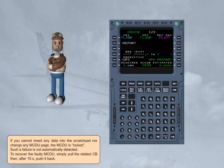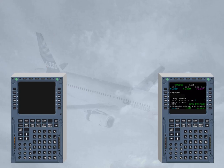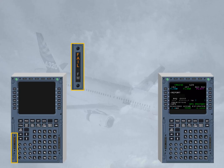If you cannot insert any data into the scratchpad nor change any MCDU page, the MCDU is locked. Such a failure is not automatically detected. To recover the faulty MCDU, simply pull the related circuit breaker, then after 10 seconds, push it back. The same procedure would apply in case of a MCDU failure indicated by the amber annunciator. You can try to recover the faulty MCDU by simply pulling the related circuit breaker, then after 10 seconds, pushing it back.